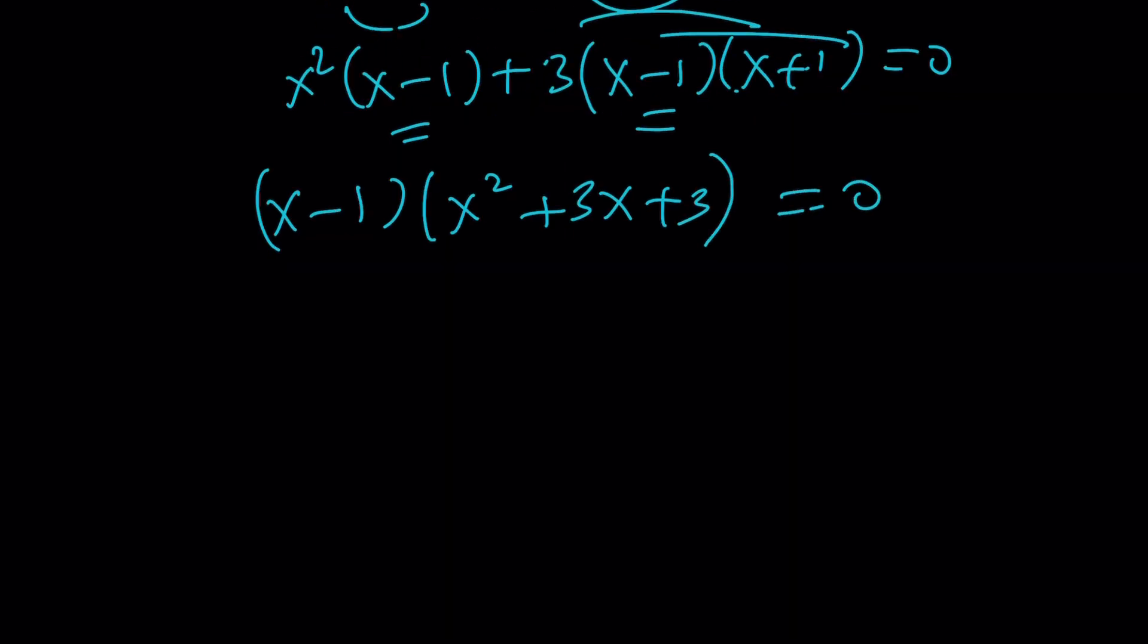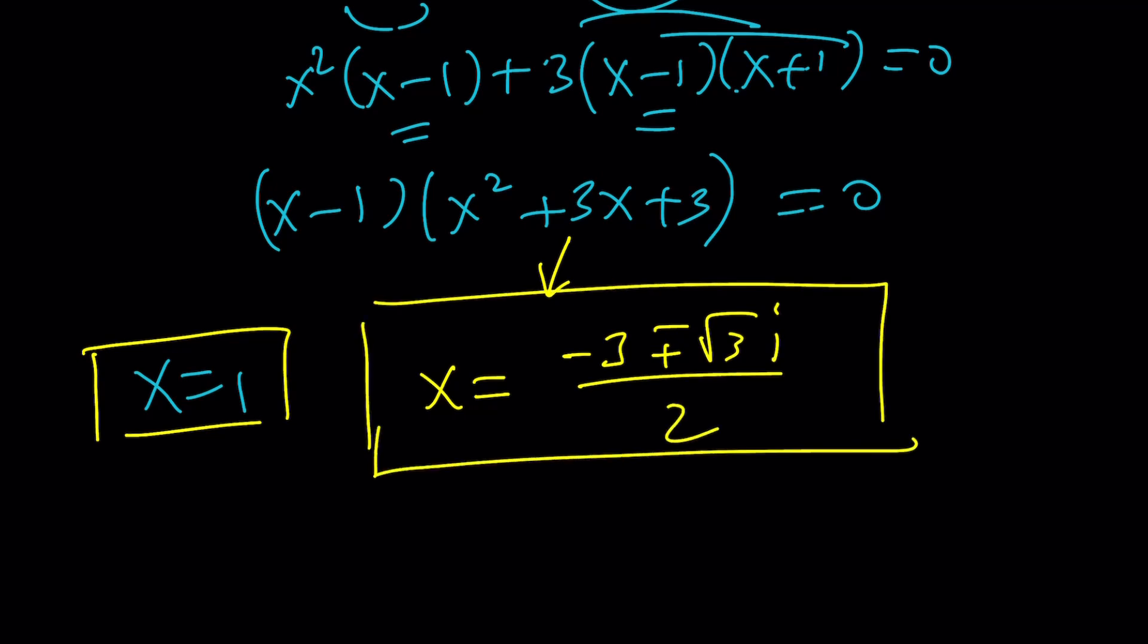Obviously, this tells you x equals 1 is a solution. That's probably something that you already knew. And that's one of the solutions. The other solution is going to come from the quadratic. Guess what? That quadratic does not have real solutions. But no worries. We're going to have some complex solutions for x.